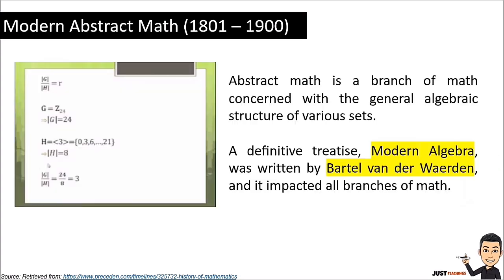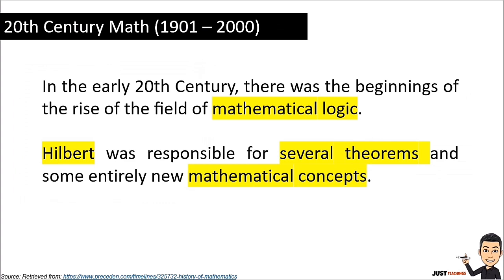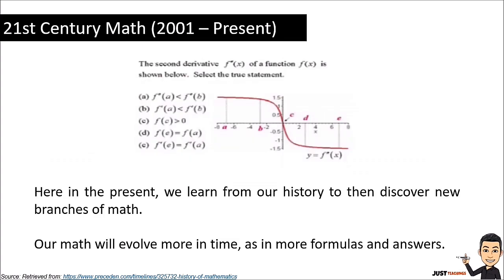Let's proceed to the last period, from the 16th century to the 21st century — the period of modern abstract math. Abstract math is a branch of mathematics concerned with the general algebraic structure of various sets. A definitive treatise on modern algebra was written by Bartel van der Waerden, and it impacted all branches of math. In the early 20th century there was the beginning of the rise of the field of mathematical logic. Hilbert was responsible for several theorems and some entirely new mathematical concepts.